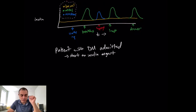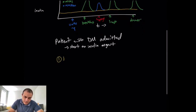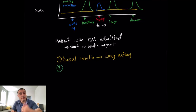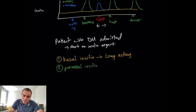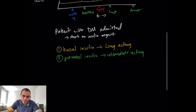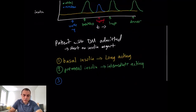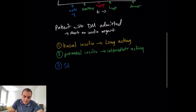Just like normal physiology, there are three types of insulin management in the hospital. Number one: basal insulin, which is a long-acting insulin that covers the patient throughout the day. Number two: pre-meal insulin, given before the meal, usually an intermediate-acting insulin like regular insulin. Number three: sliding scale insulin, which is short-acting and used as a compensatory or reactionary dose for hyperglycemic episodes.